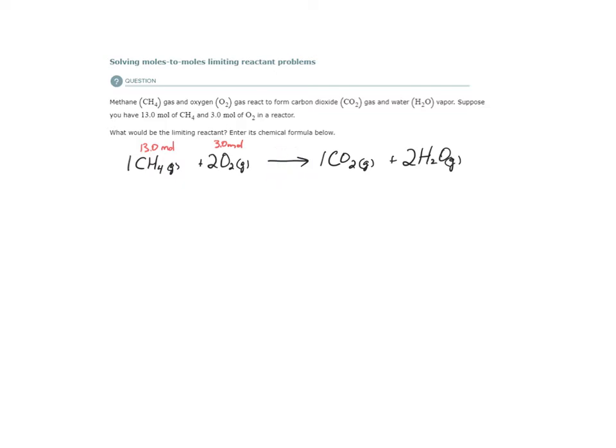So how do we find our limiting reactant? Well, there are many ways to do that. The way that I prefer to do it is this way. You take your starting amount of your first substance and you convert to any one of your products. If you're the limiting reactant for carbon dioxide, you're also the limiting reactant for water, so it doesn't matter which one you convert to. Let's just convert to water. So we're going to figure out how much water we can make from 13 moles of methane. We're not worried about how much oxygen we have. Let's just say we have plenty of oxygen. How much water can I make from this amount of methane?